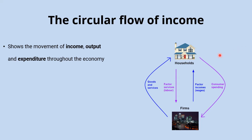We can see here flows from households to firms in the form of consumer spending. And in return for this, output flows from firms to households in the form of goods and services. At the same time, households provide their services to firms in the form of labour, and flowing back from firms to households is the payment for this labour in the form of wages.